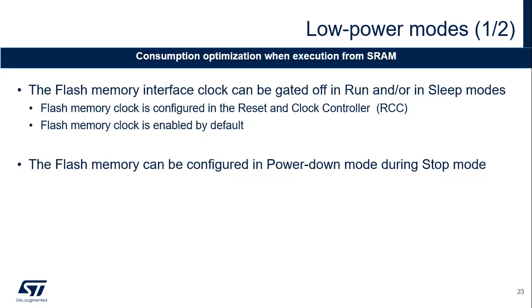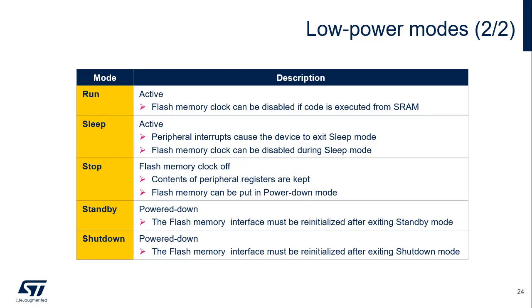The flash memory module can be clock gated when the processor doesn't need to access the flash memory and also in low power modes. The flash memory module can also be power gated in stop mode. The supported low power capabilities include clock gating, flash memory power down mode, and power gating of the entire module — flash memory and controller. In run and sleep modes, only clock gating is supported. In stop mode, the clocks are gated and flash memory can enter power down mode. In standby and shutdown mode, the power of the flash memory module is gated for both the flash memory and controller.